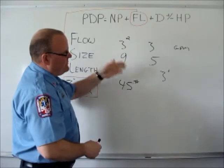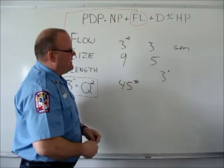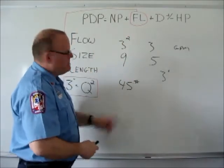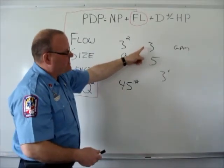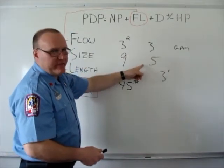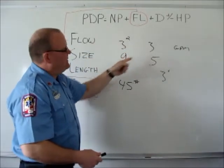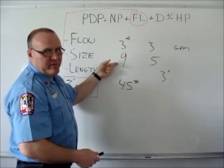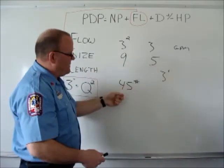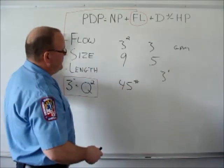So using this method, you could change the numbers around. Any numbers that you use, same thing. Divide by 100 for the gallons per minute and for the length, and then square the number that you come up with for the gallons per minute. Whatever number you end up with, multiply times the length, and that would give you your total friction loss. So flow, size, and length.